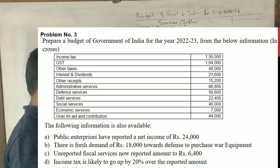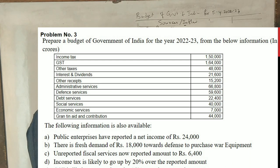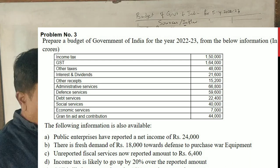Prepare a budget of Government of India for 2022-23 from the below given information in crores. There are five adjustments.